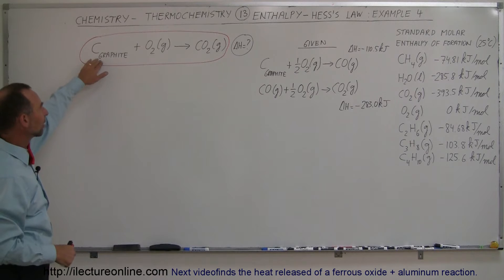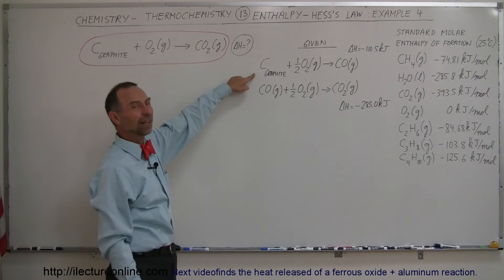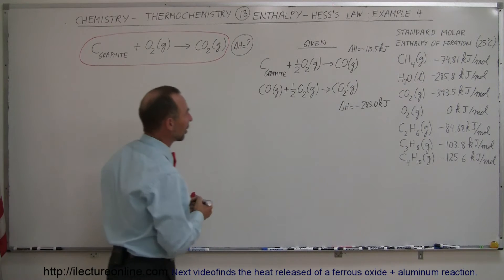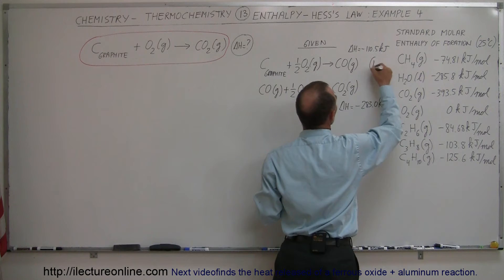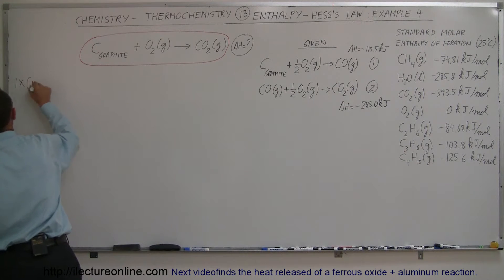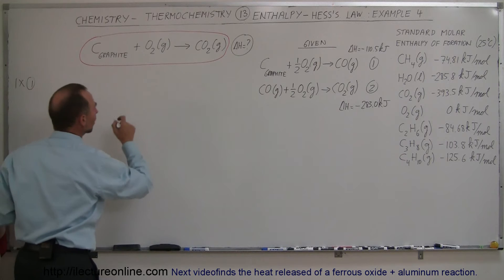Notice that we have graphite on the left side. This equation has graphite on the left side, so I think we can just go ahead and take that equation and plop it down right here. If we call this equation number one and this equation number two, over here we're just going to say one times equation number one. Simply plop it down just as it is.